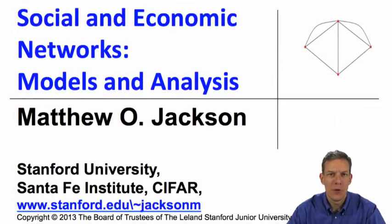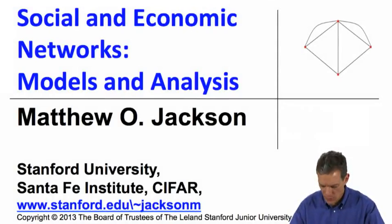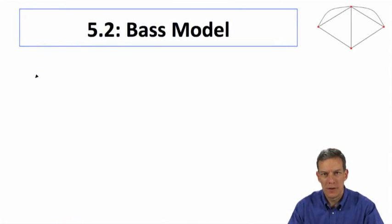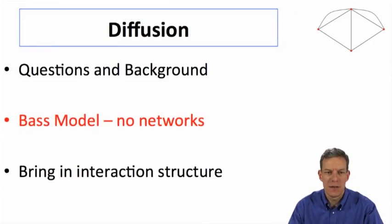Hi, folks. We're back. I'm talking more about diffusion. In particular, we're going to start looking at one of the best known models in the literature on diffusion, which is known as the Bass model. It's been used quite extensively, especially in marketing and trying to understand things. We've gone through some questions and background. We're going to start with the Bass model. One thing about the Bass model is networks are not going to make an explicit appearance here. We're just going to have social interaction in the background. After we've looked at the Bass model, then we'll enrich the analysis by bringing interaction structure in explicitly and trying to understand how things diffuse over time.